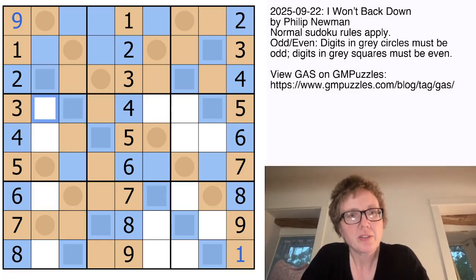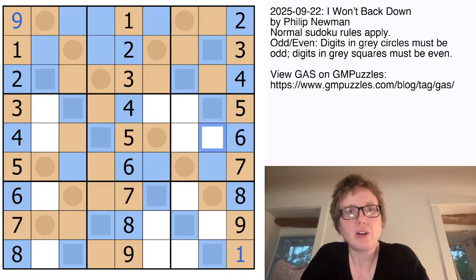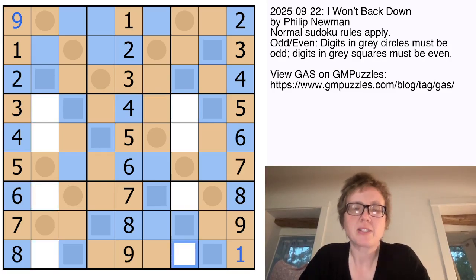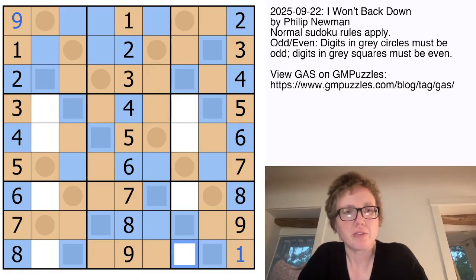And where else can we go from here? We have all of our even digits in column eight, so that's going to be odd. That makes this even, which makes this odd. And that might be all we can do for now. There might be one or two more that we can get, but let's go ahead and do a little bit of Sudoku work.